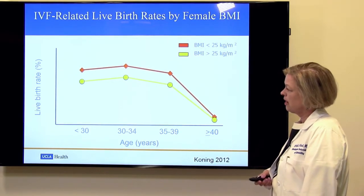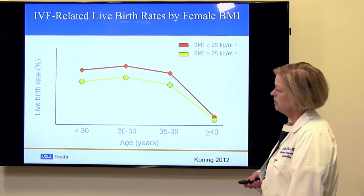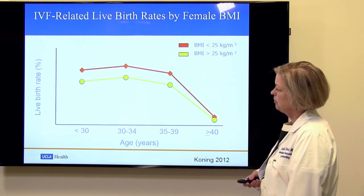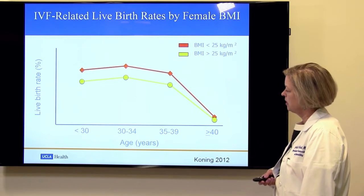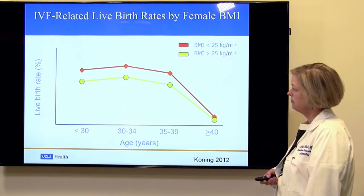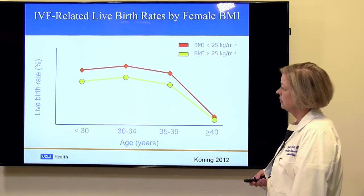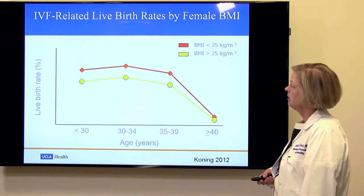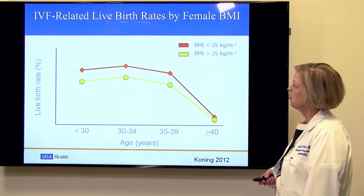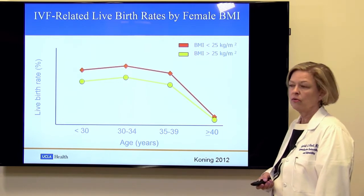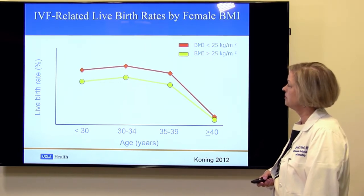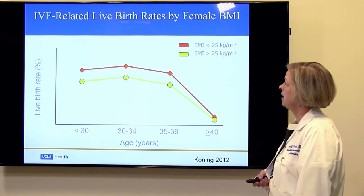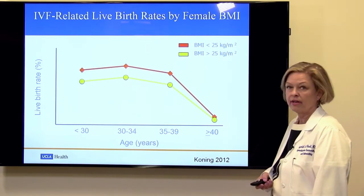What we see on this graph is the age of the woman at the bottom: 30, between 30 and 34, 35 and 39, and greater than 40 — and the live birth rate. The yellow represents women with a BMI greater than 25, so either overweight or obese, and the orange represents women with a BMI of less than 25.